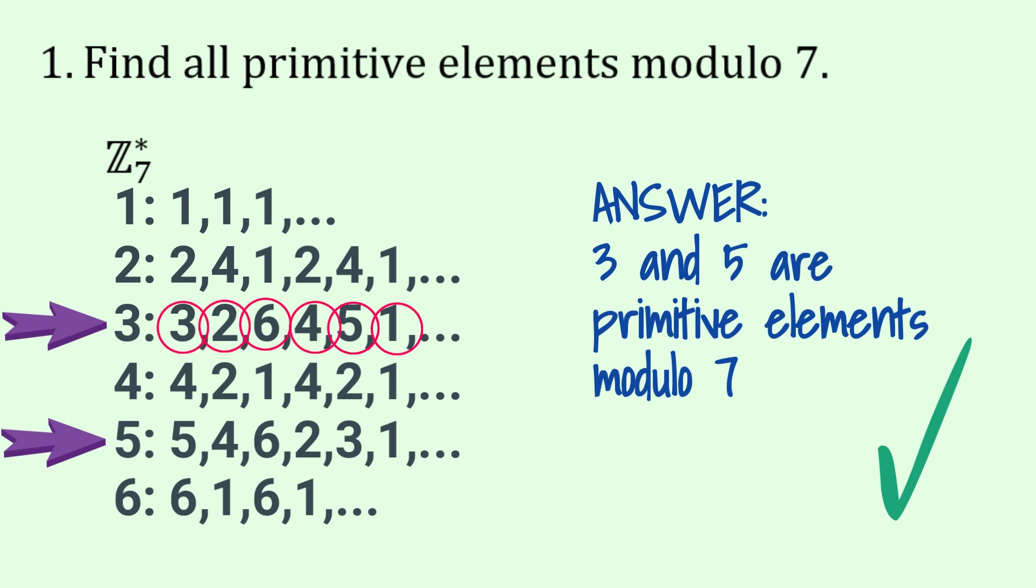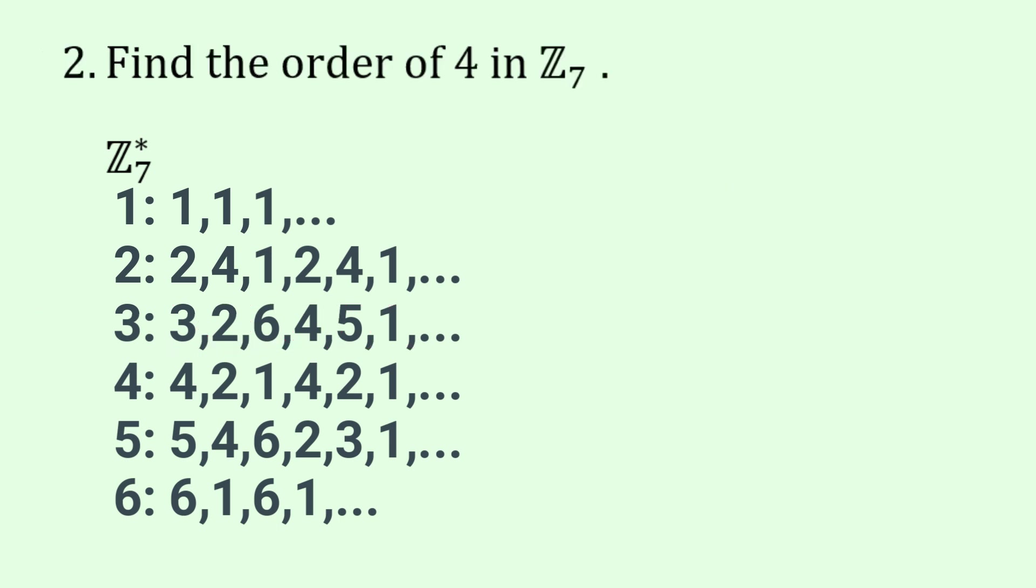So now let's go on to the next question. Find the order of 4 in Z 7. So if we cast our eyes down to the row involving 4 you can see that we get the orders go 4, 2, 1, 4, 2, 1.